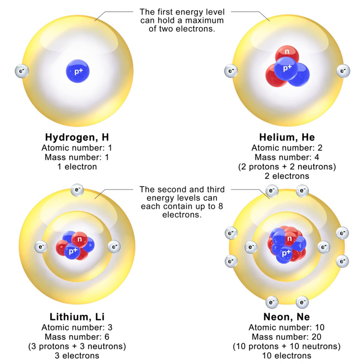The antineutron is the antiparticle of the neutron. It was discovered by Bruce Cork in the year 1956, a year after the antiproton was discovered. CPT symmetry puts strong constraints on the relative properties of particles and antiparticles, so studying antineutrons provides stringent tests on CPT symmetry. The fractional difference in the masses of the neutron and antineutron is on the order of 10⁻⁵. Since the difference is only about two standard deviations away from zero, this does not give any convincing evidence of CPT violation.